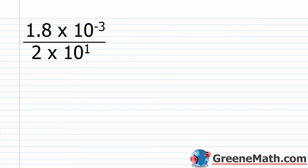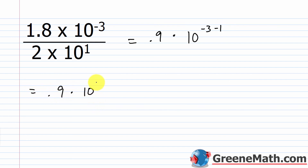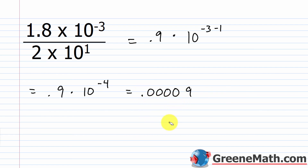For 1.8 times 10^-3 divided by 2 times 10^1: divide 1.8 by 2 to get 0.9, then use the quotient rule — 10^-3 divided by 10^1 equals 10^(-3-1) = 10^-4. So we have 0.9 times 10^-4. Moving the decimal 4 places to the left gives 0.00009 as the final answer.